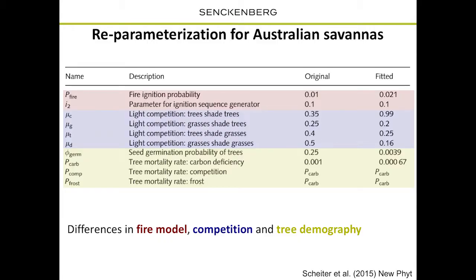We went further to do model calibration. We selected parameters that are very uncertain in our model and did model optimization to find better agreement between simulated data and observations. We used this set of parameters and did recalibration with eddy flux measurements at two sites in Northern Australia. The parameters we had to change were mainly related to fire models and conditions where fire occurs, competition within and between plants, and demographic rates — seed germination rates and mortality rates of trees.